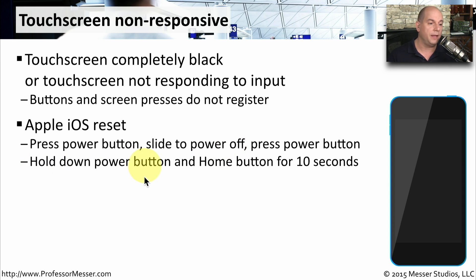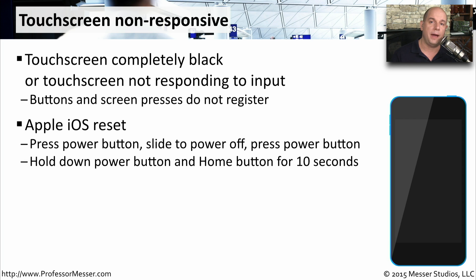To perform a hard reset on iOS, we hold down the power button and the home button at the same time for 10 seconds. The phone will automatically power itself down and then power itself back up again.